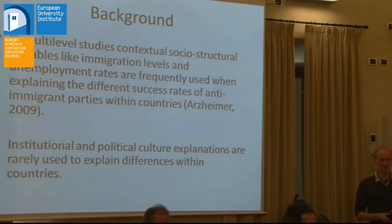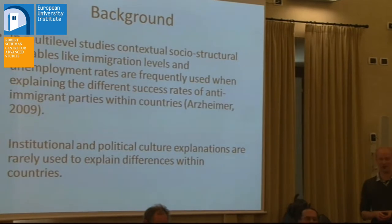This brings me to the point we are actually looking at in our paper. It's often the case that when you want to explain the success of anti-immigrant parties within or across countries, we rely on indicators such as the unemployment rate, unemployment rate changes, or changes in the size of the immigrant population — mainly socio-structural indicators. But that doesn't always work; for example, in Switzerland it doesn't work very well, and sometimes it doesn't work at all.